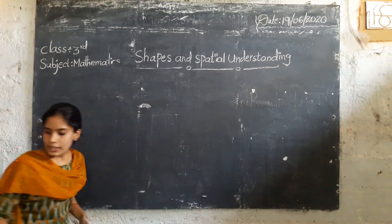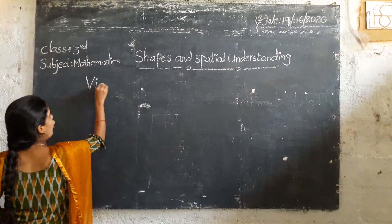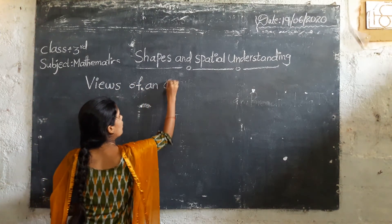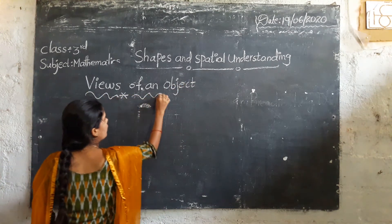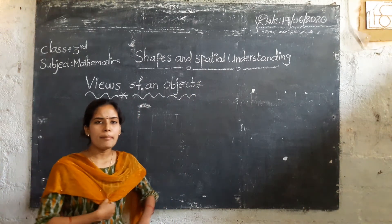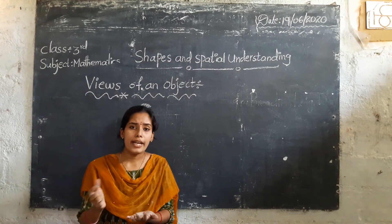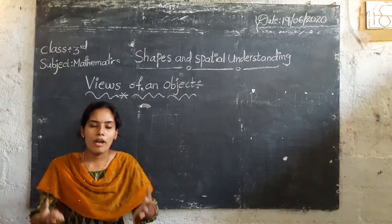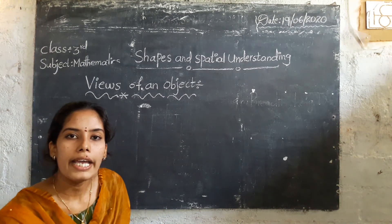And next we will discuss about views of an object. What is the meaning of views of an object? That means a 3D object can look different in different directions. The 3D object has a different type of views in different directions. We will observe this with examples.